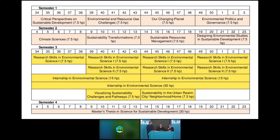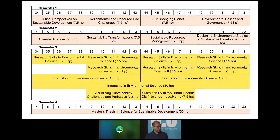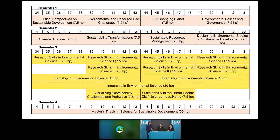In semester three, rather than having set tracks, students can pick and mix. The third semester is designed to give students the opportunity to define their own profiles and skills based on what they learned in the first year and what they're interested in pursuing. Since students have different backgrounds and different interests within sustainable development science, the semester lets you shape your profile based on your interests.